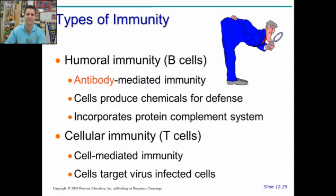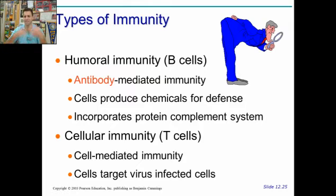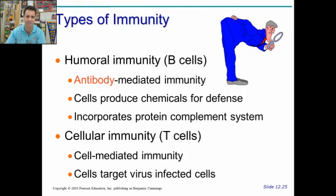Two types of specific immunity include humoral immunity and cellular immunity. Humoral immunity uses B cells and antibodies, and also the protein complement system. Cellular immunity uses T cells — we also call it cell-mediated immunity — and this targets cells and actually physically kills them, including those with virus particles inside of them. This is how you target your own cells with viruses in them, with the help of natural killer cells.